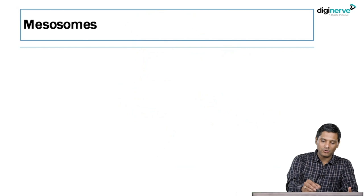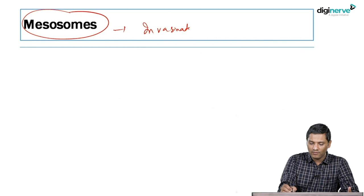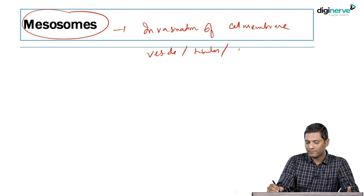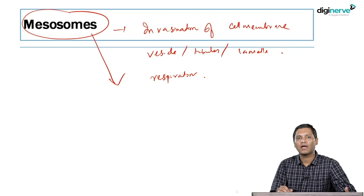Mesosomes are invaginations of the bacterial cell membrane, either in the form of vesicles, tubules, or lamellae. They perform respiration for bacteria — as bacteria do not have mitochondria, the organelle of respiration in bacteria is the mesosome.